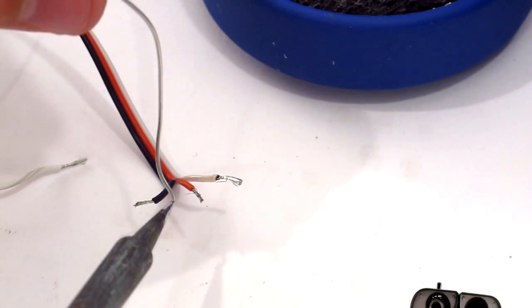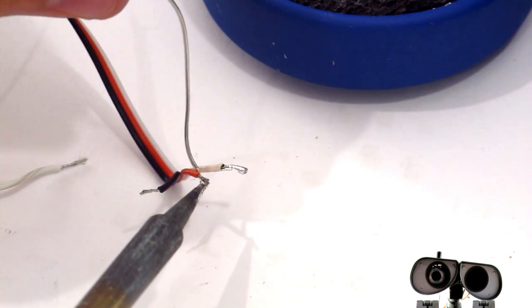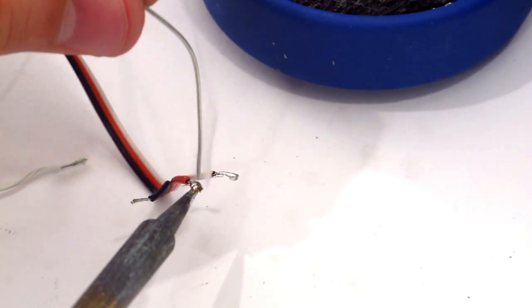Now, let's tin the end of the wires. Proper soldering technique. Put a little bit of solder on the end of the tip. Connect it to the wire, so the wire now absorbs the temperature. And you feed the solder into the wire.